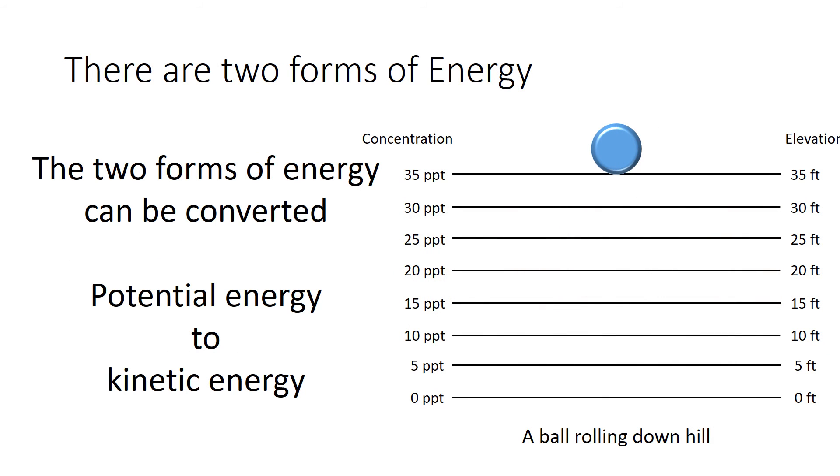Recall back to the first law of thermodynamics. And it said, you can't create or destroy energy. But you can transfer it and you can transform it. So the two forms of energy can be converted between each other. You can convert potential energy to kinetic energy. So if you have a ball at the top of the hill and it's just hanging there, it has potential energy. And once you release it, it rolls down the hill, gaining kinetic energy. So as a ball rolls down the hill, potential energy is converted to kinetic energy.